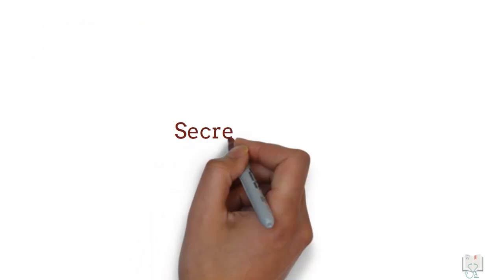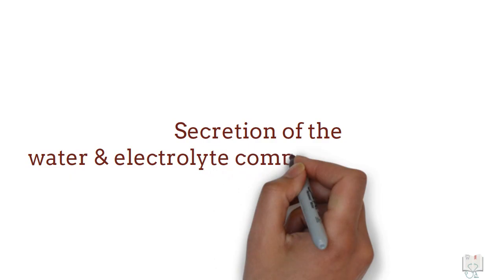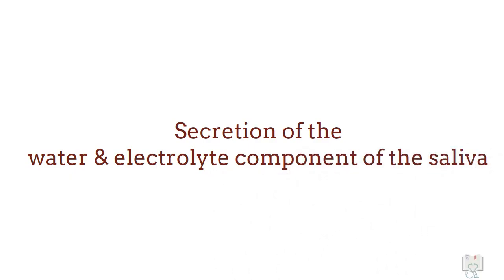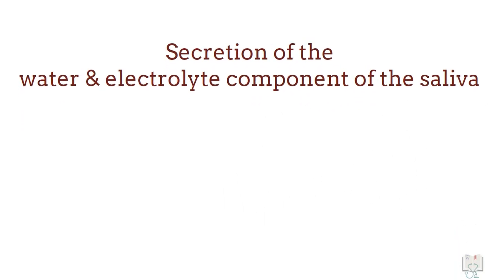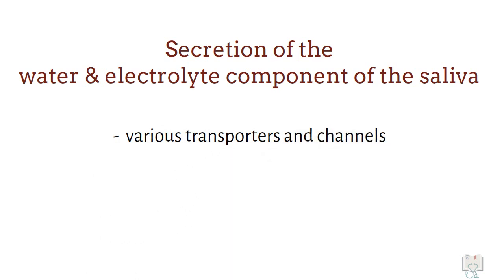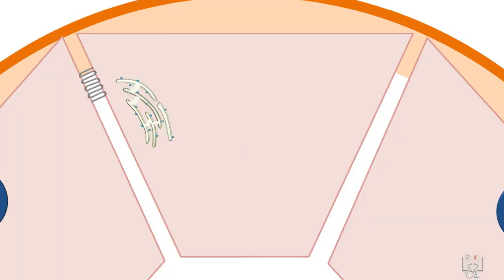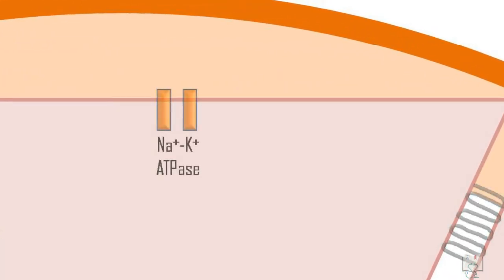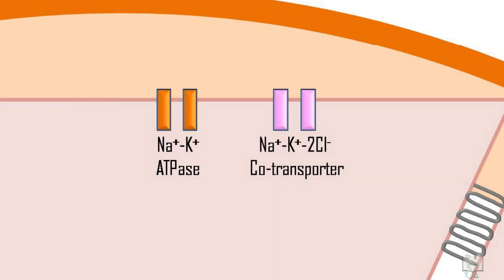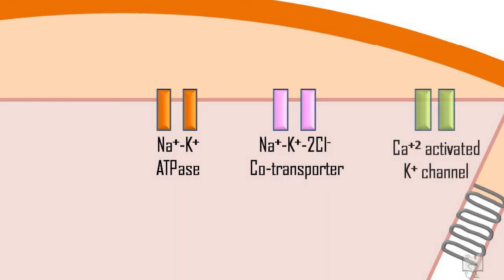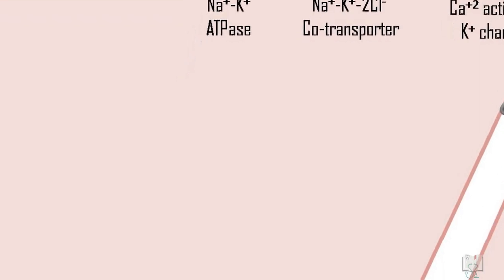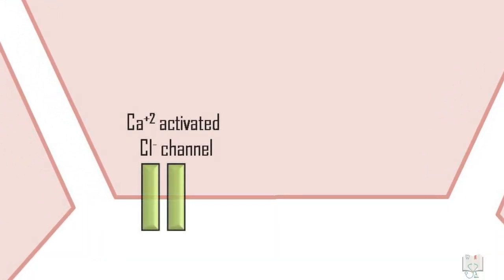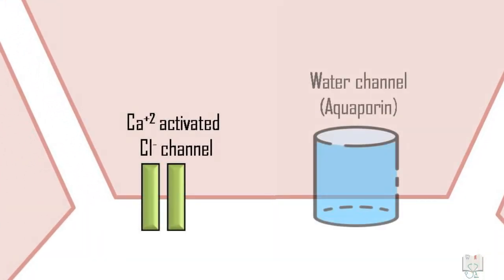The secretion of the water and electrolyte component of saliva depends on various transporters and channels. The basal membrane of the acinar cells has a sodium-potassium ATPase channel, a sodium-potassium-2-chloride co-transporter, and a calcium-activated potassium channel. The apical membrane towards the lumen has a calcium-activated chloride channel and a water channel called aquaporin.